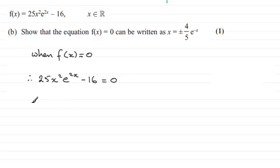From here, if I add 16 to both sides, I've therefore got 25x²e^(2x) = 16. Then I'll divide both sides by 25 and e^(2x), which leaves me with x² = 16/(25e^(2x)).